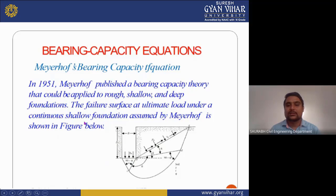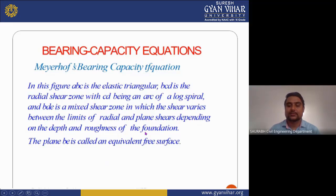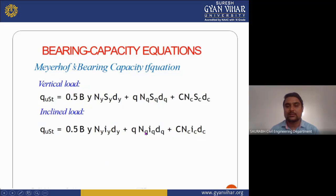Here is Meyerhof's bearing capacity equation, which is also used for finding bearing capacity of soil. Published in 1951, this theory can be applied to rough shallow and deep foundations. The failure surface at ultimate load under a continuous shallow foundation assumed by Meyerhof is shown in the figure below. In this figure, ABC is the elastic triangular zone, BCD is the radial shear zone with CD being an arch of the logarithmic spiral, and BDE is the mixed shear zone where shear varies between limits of radial and plane shear depending on depth and roughness of the foundation. The plane B is called an equivalent free surface.